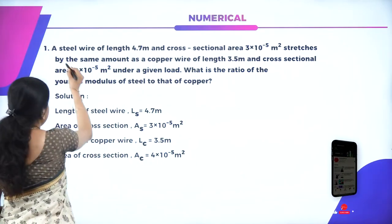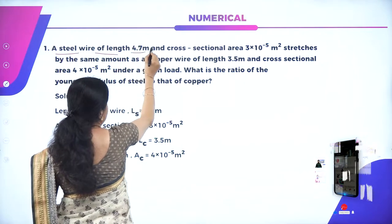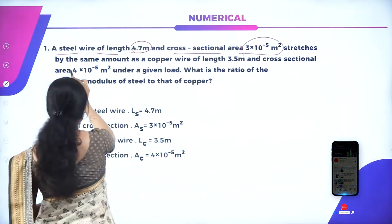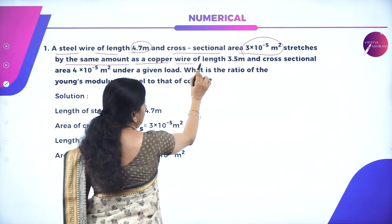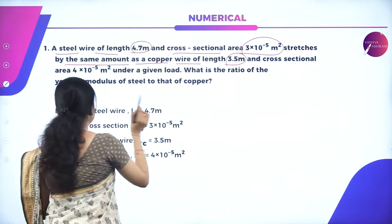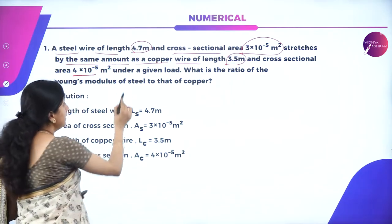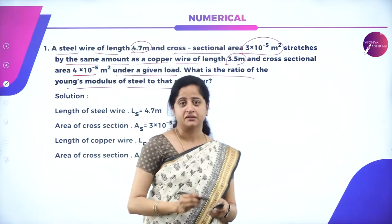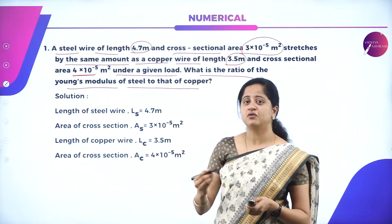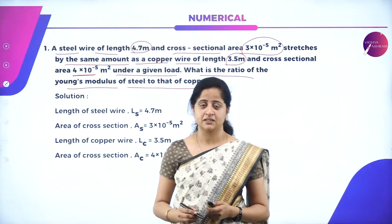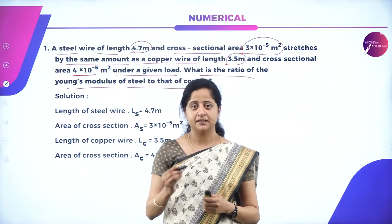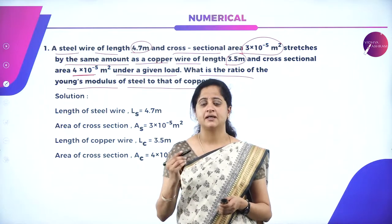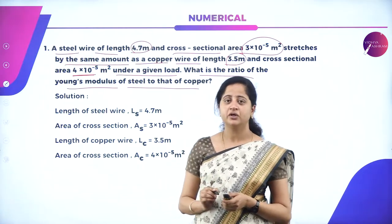Let us begin with the first problem. A steel wire of length 4.7 meter and cross-sectional area 3×10⁻⁵ meter square stretches by the same amount as a copper wire of length 3.5 meter and cross-sectional area 4×10⁻⁵ meter square under a given load. What is the ratio of Young's modulus of steel to that of copper?